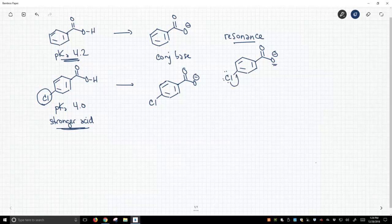And so we can actually push electron density from this chlorine through these pi bonds. I'm trying to show them going to that carbon right there.